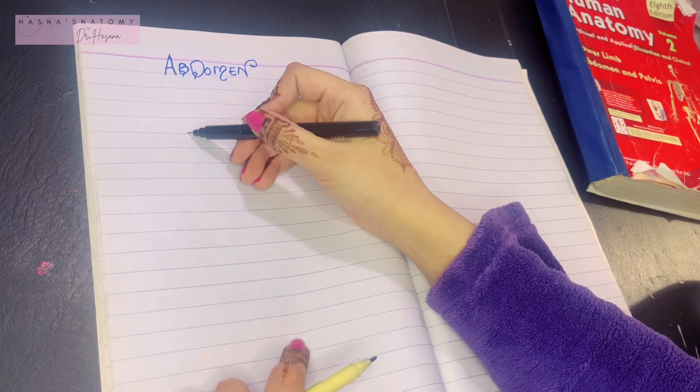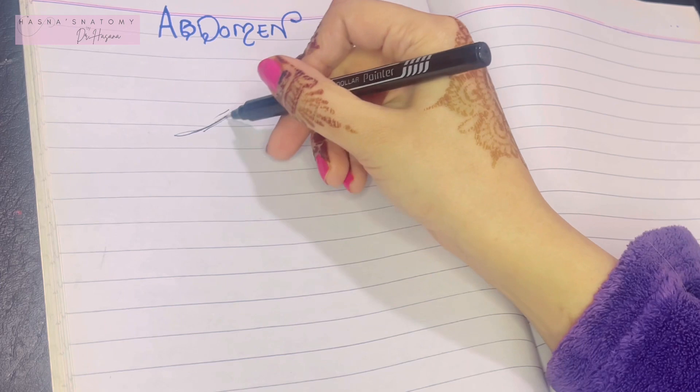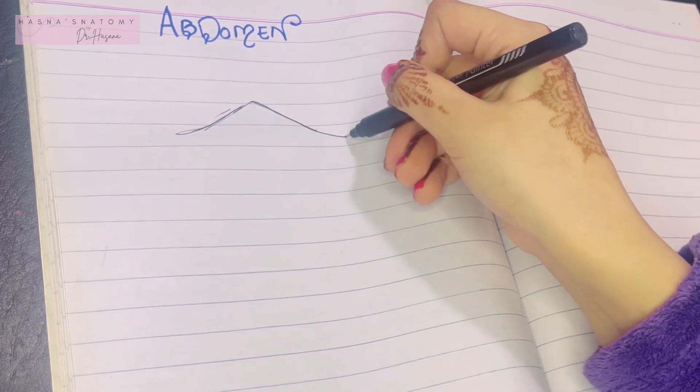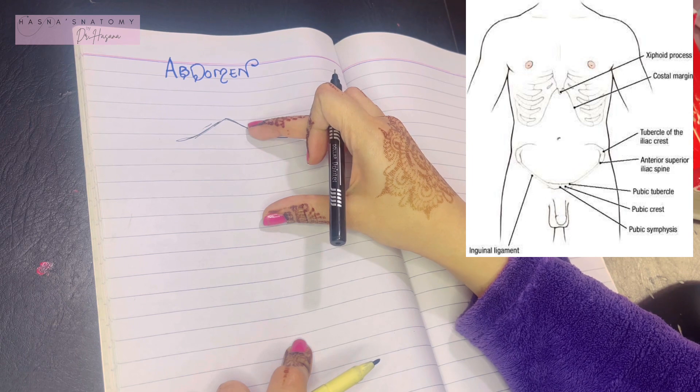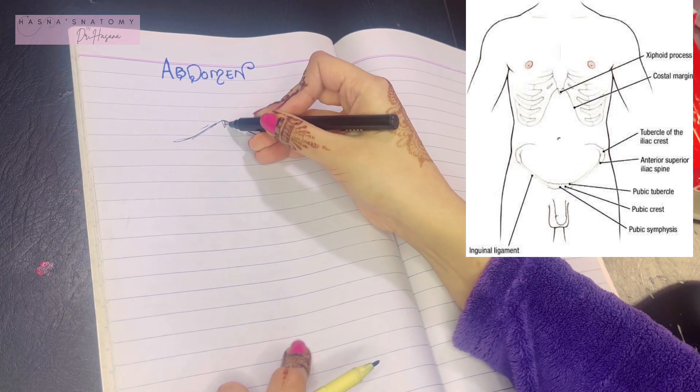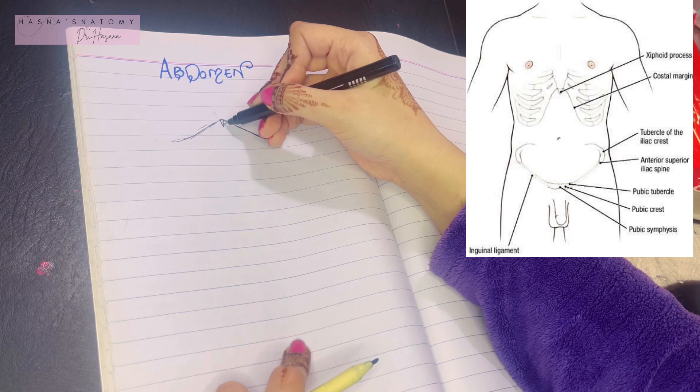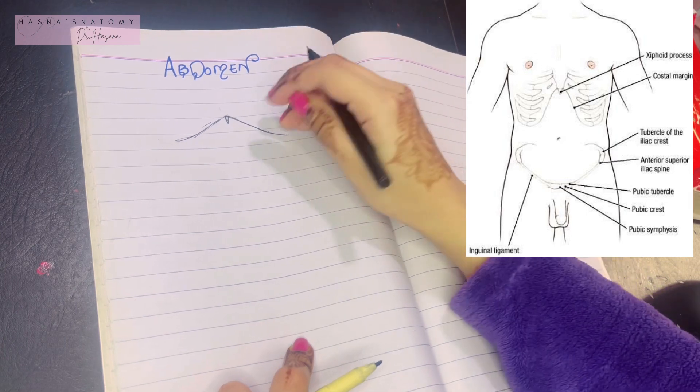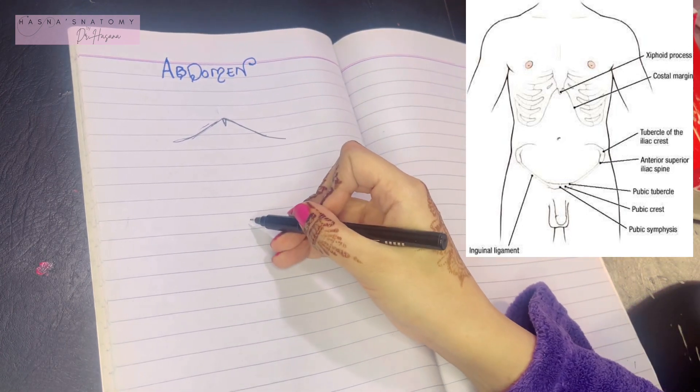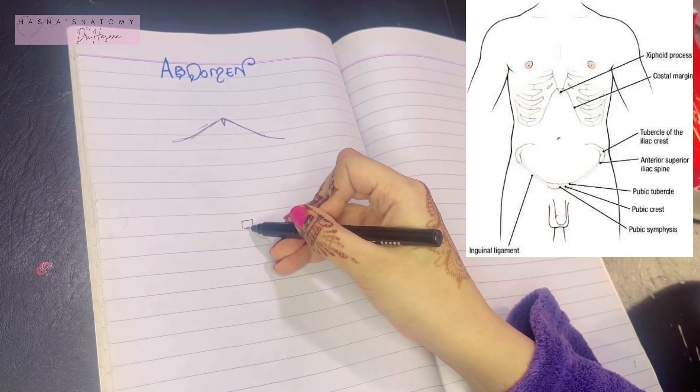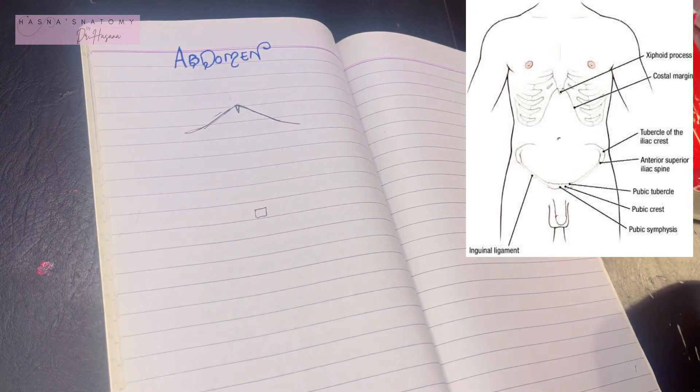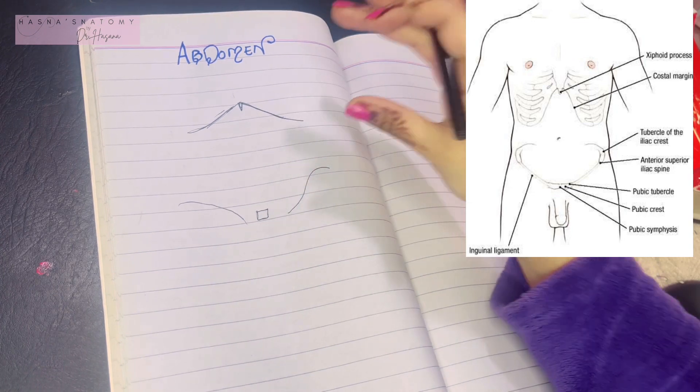If you remember, we had the thorax, and the thorax ended right here with the diaphragm. So the lower part of the trunk is known as the abdomen. Superiorly, you can see the xiphoid process. If you remember, we had the sternum ending in a tapering small end called the xiphoid process. Below, the lower limit of the abdomen is the pubic symphysis, where two hip bones meet in the midline.